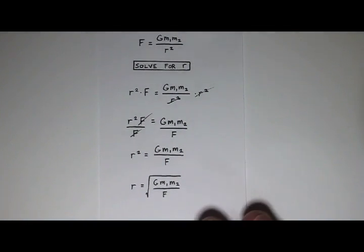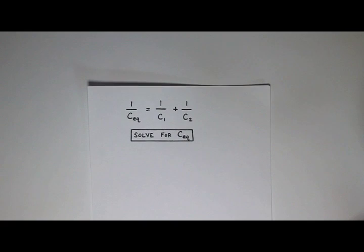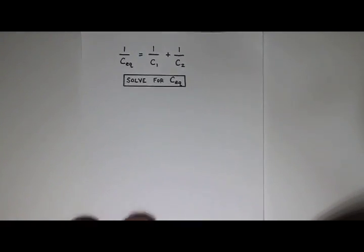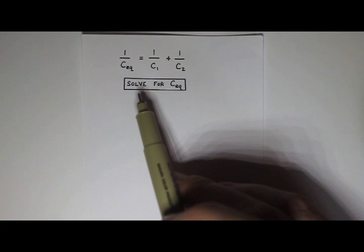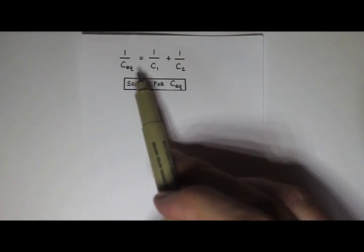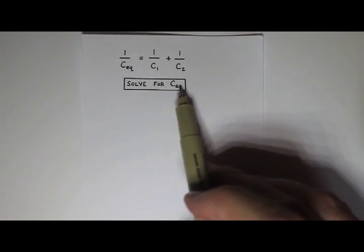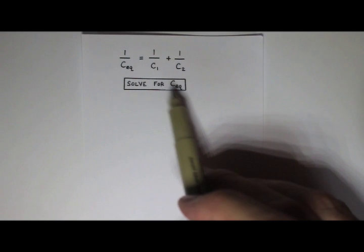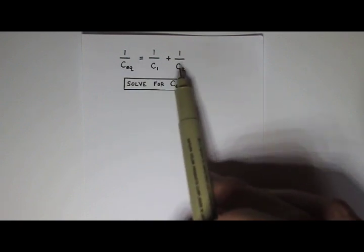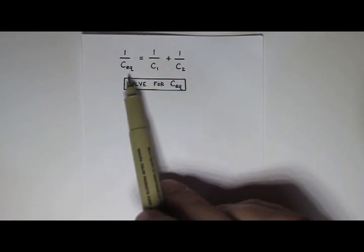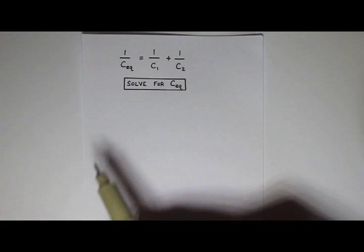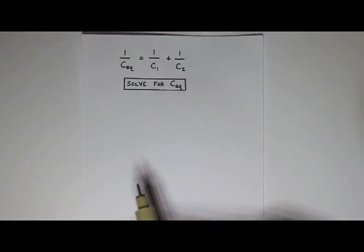So let's look at one more equation. This one you'll probably see in physics. This says 1 over c, and then that says eq. That's equivalent. You don't really need to know what this means right now. Just know that I want to solve this equation for c equivalent. And 1 over c equivalent equals 1 over c1 plus 1 over c2. Now this looks pretty easy. But the problem is that it's 1 over c equivalent. And I want c equivalent.